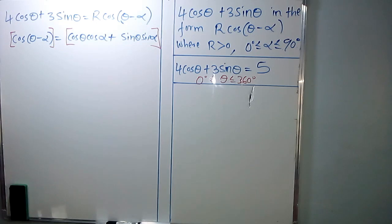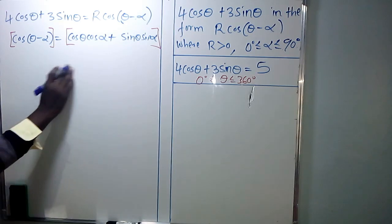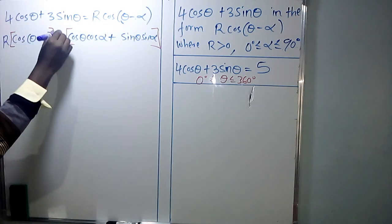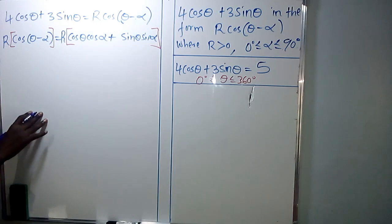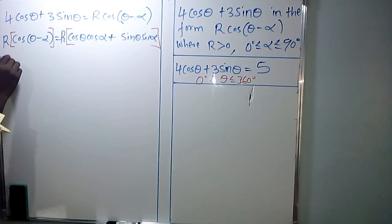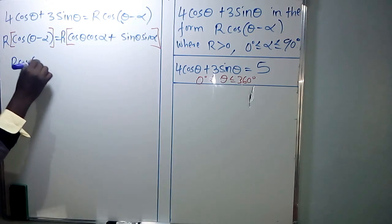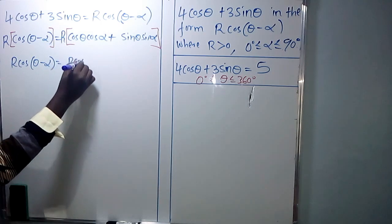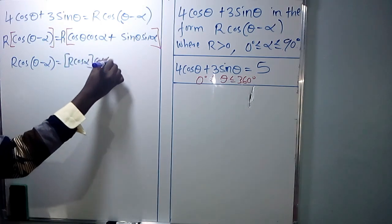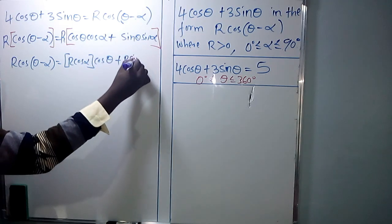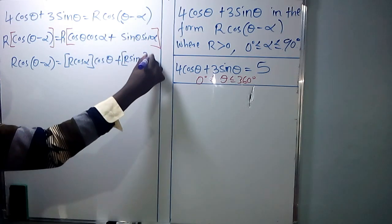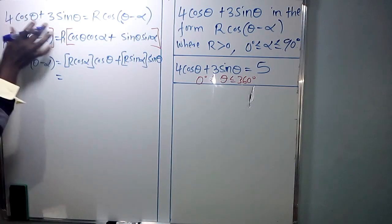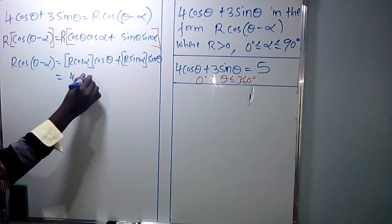From here, we are supposed to express it in the form R cos(theta minus alpha), meaning we multiply both sides of this equation by R. So we have R cos(theta minus alpha) equivalent to R cos theta cos alpha, which can be written as R cos alpha times cos theta, plus R sin alpha times sin theta.